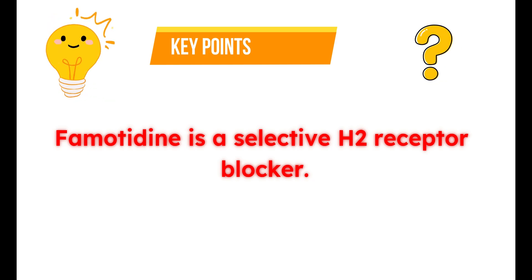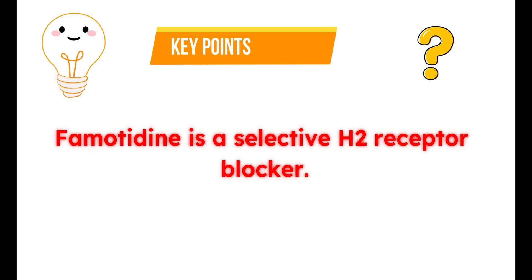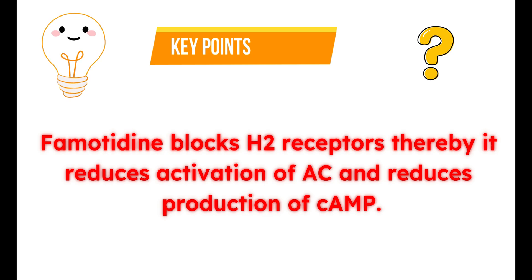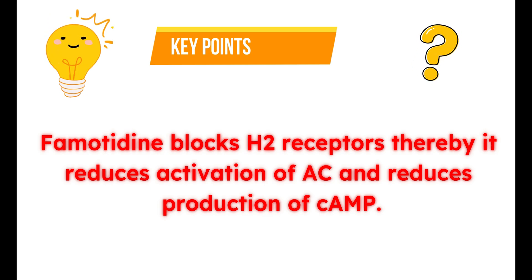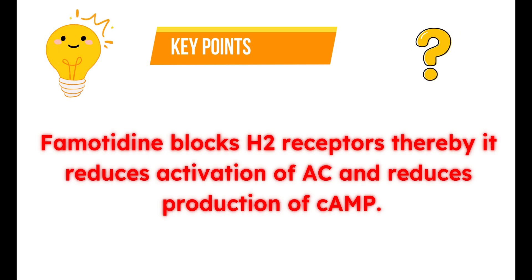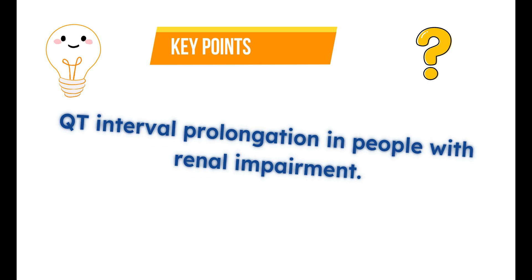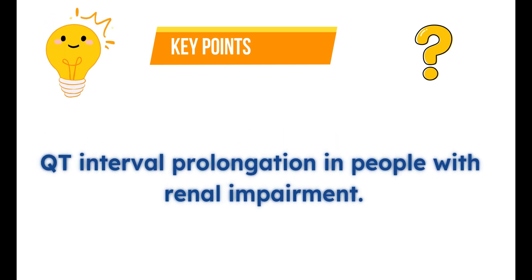What is famotidine? Famotidine is a selective H2 receptor blocker that reduces gastric acid secretion by blocking histamine H2 receptors. How does this medication work? Famotidine blocks H2 receptors, thereby reducing activation of the adenylyl cyclase system. This results in decreased production of cyclic AMP, decreased intracellular calcium levels, and finally reduced gastric acid secretion. What is the important precaution? Famotidine can produce QT interval prolongation in people with severe renal impairment.